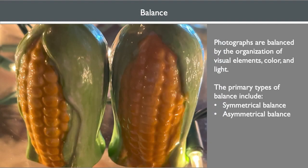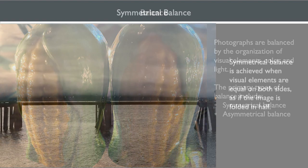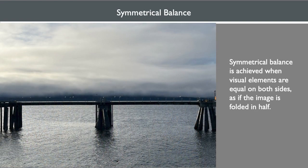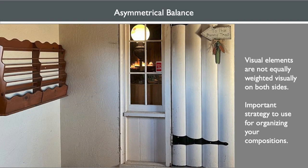To conclude this presentation, we're going to look at the importance of balance. Photographs are balanced by the organization of visual elements, color, and light. The primary types of balance include symmetrical and asymmetrical. Symmetrical balance is achieved when visual elements are equal on both sides, as if the image could be folded in half. In the natural world, approximate symmetry is accepted as visually symmetrical. Asymmetry is when items are not equally weighted visually on both sides, and it can be used with the rule of thirds to organize your composition.